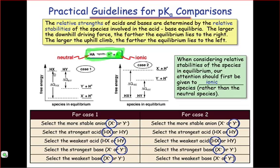What you're looking at here are two energy diagrams that illustrate two possible situations. In the situation on the left, case number one, the dissociated components, X- and Y-, are more stable than the initial neutral acids. Going downhill in energy from the starting materials to the products,